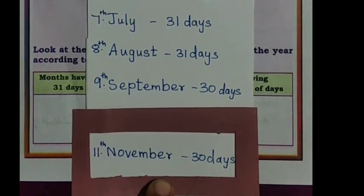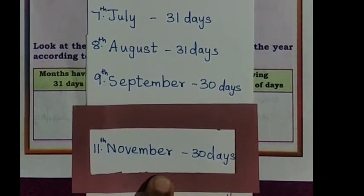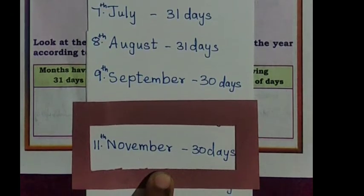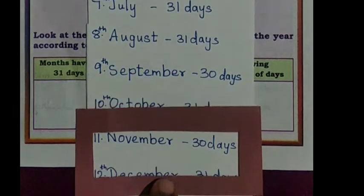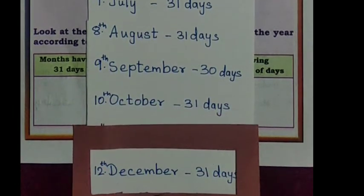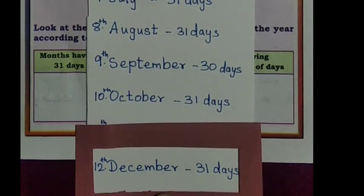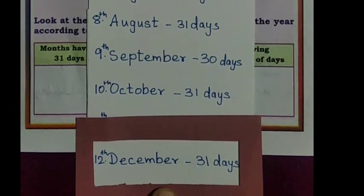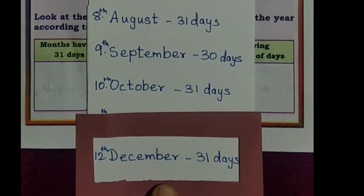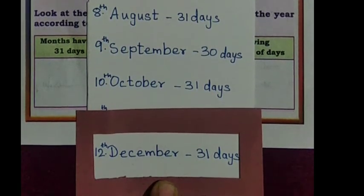Tenth Month of the Year is October. It has 30 Days. Twelfth Month of the Year is December. It has 31 Days.